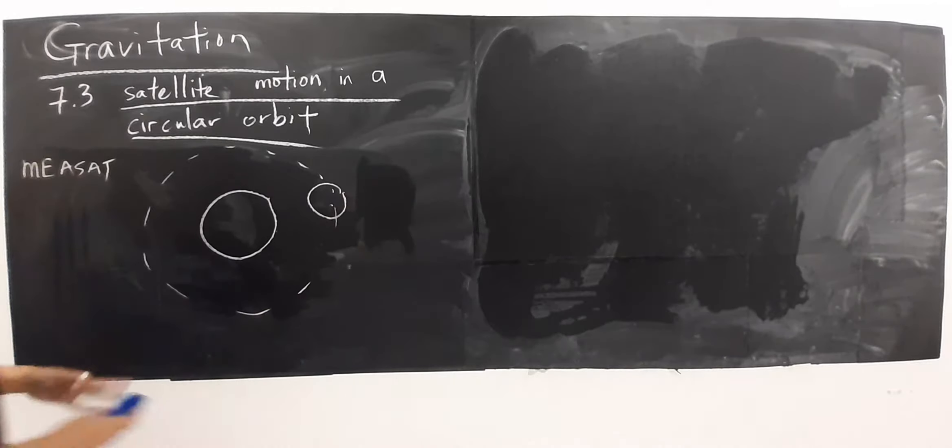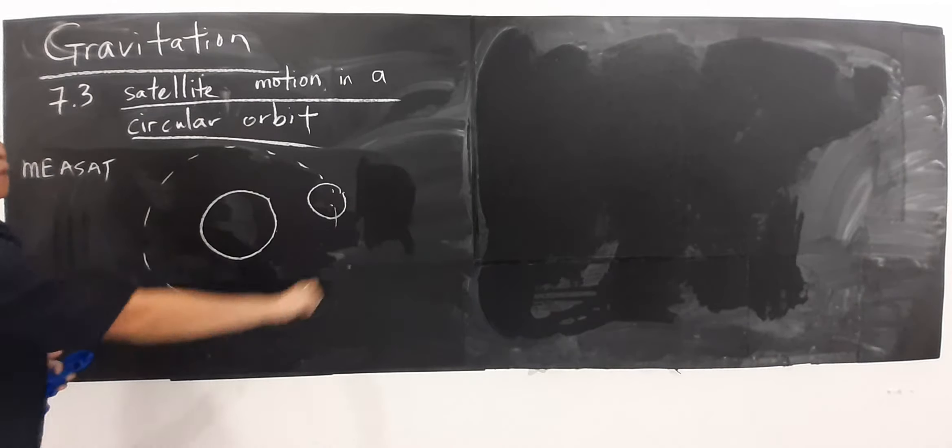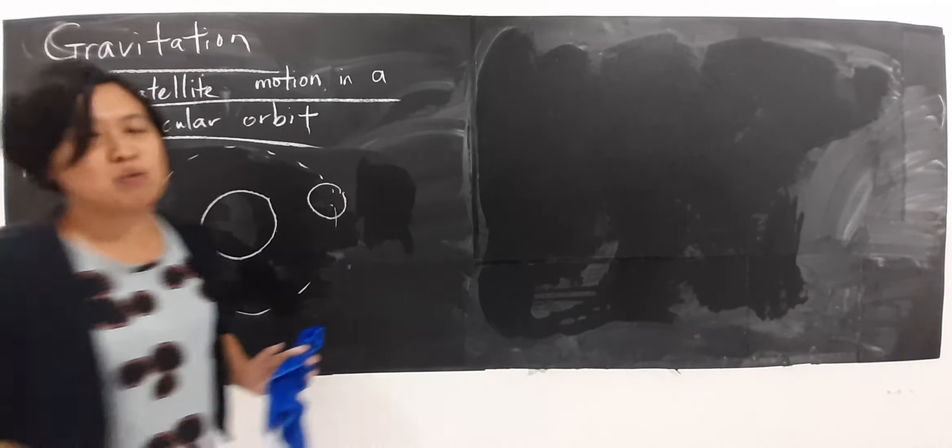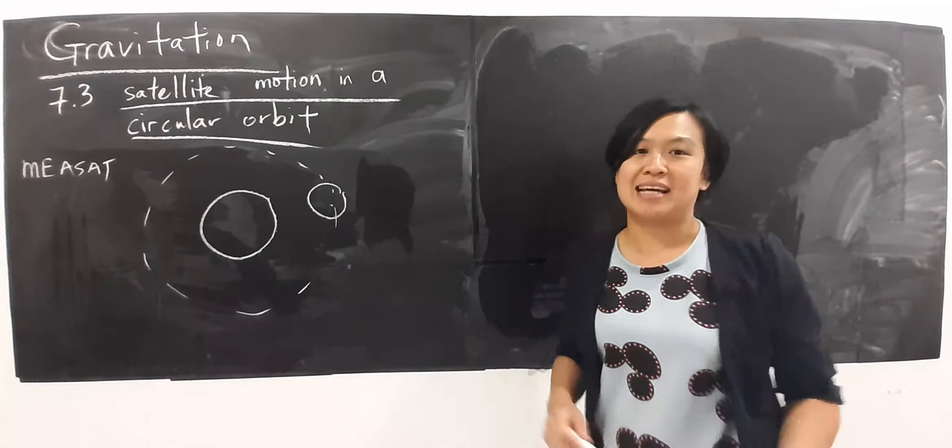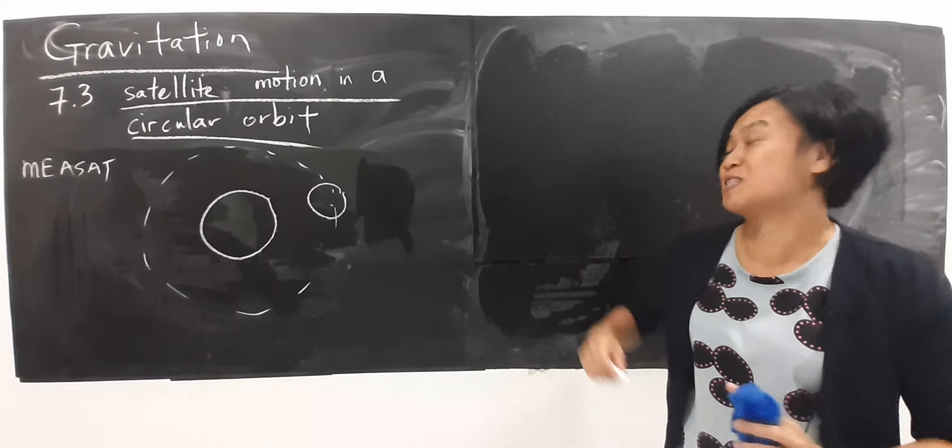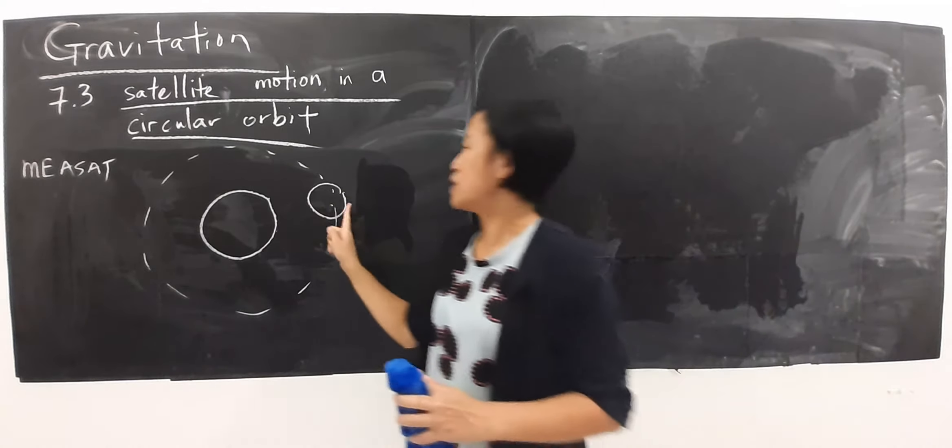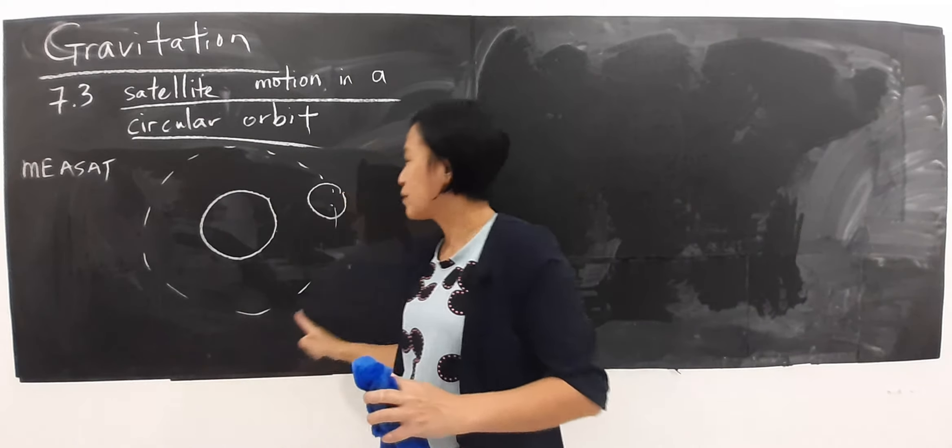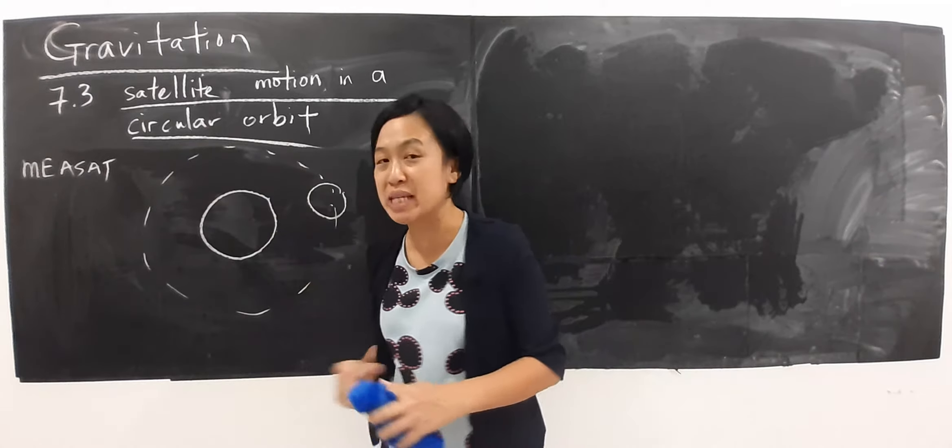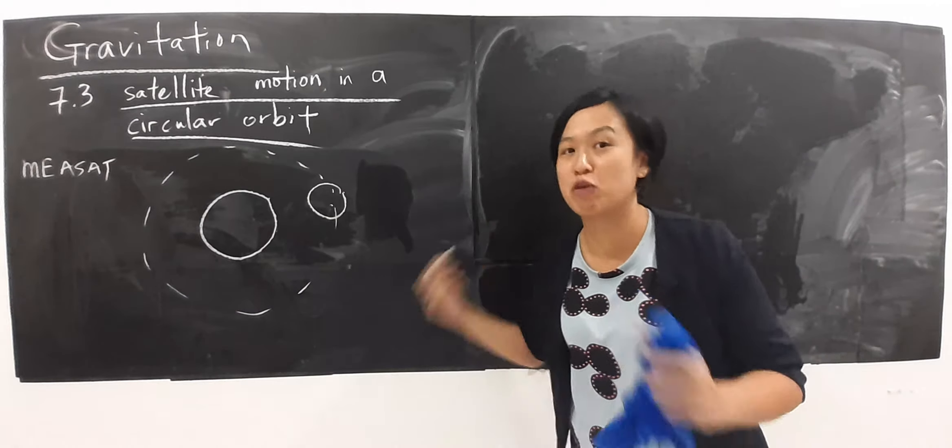So we have satellite motion. What we are concerned is actually speed for the satellite. How we are going to derive the equation for the speed for the satellite. For information, for the satellite revolved about the bigger mass, centripetal force important.